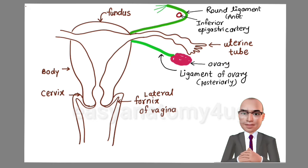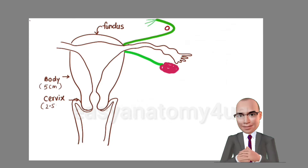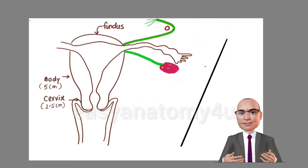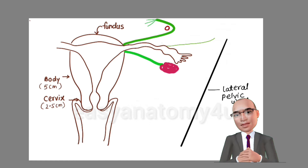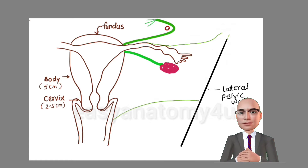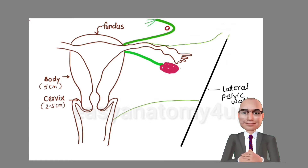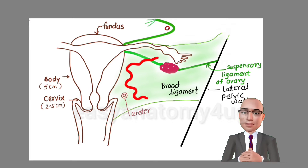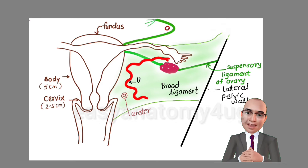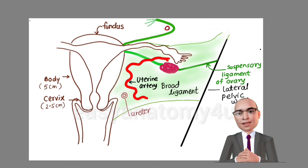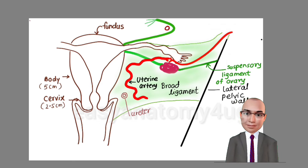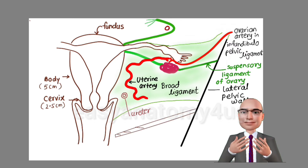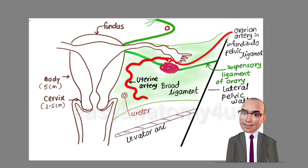Draw the lateral pelvic wall to show the lateral relations of the uterus — in between the lateral border of the uterus and the lateral pelvic wall. Show the broad ligament and suspensory ligament of ovary. Show important contents of the broad ligament like the ureter, uterine artery, and ovarian artery running within the infundibulopelvic ligament and anastomosing with the uterine artery. Draw the levator ani muscle, which is the main muscular support of the uterus.